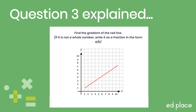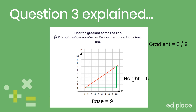In our final question, the first thing to do is to turn our line into a right-angled triangle. Step two: count the squares to find the height and base — for this line, the height is 6 and the base is 9. Step three: to calculate the gradient, we divide 6 by 9. We can leave the answer as 6 over 9 as a fraction, or simplify to give 2 over 3.